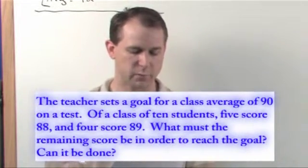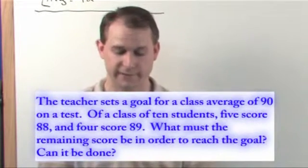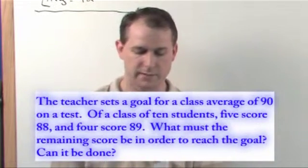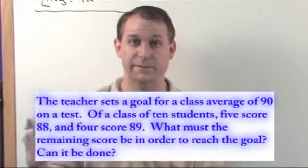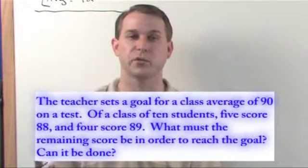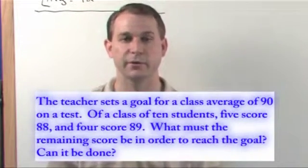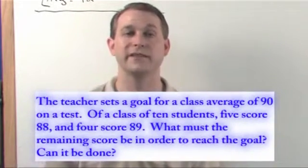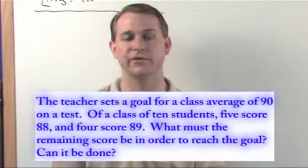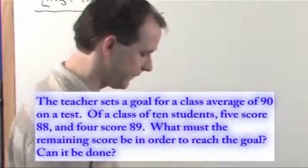Let's read it one more time. There's a class goal of a 90 average on the test. Out of 10 people, five of them score an 88, four of them score an 89. What must the last person score to raise the average up to the goal? And can this actually be done?